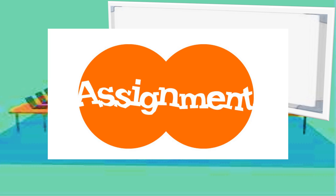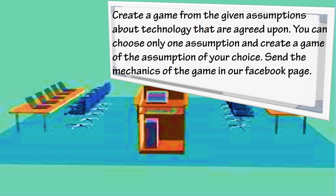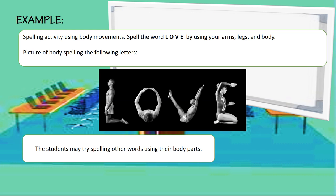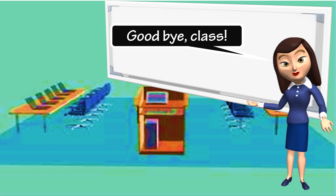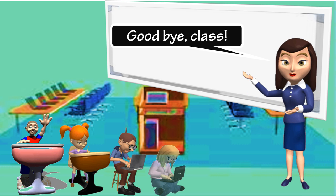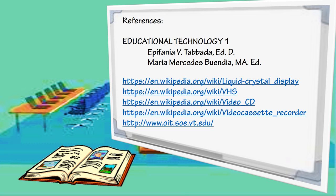And this is for your take-home assignment. Create a game from the given assumptions about technology that are agreed upon. You can choose only one assumption and create a game of the assumption of your choice. Send the mechanics of the game in our Facebook page. Spelling activity using body movements: Spell the word L-O-V-E by using your arms, legs, and body. The students may try spelling other words using their body parts. Goodbye, class. Goodbye, teacher. Thank you.